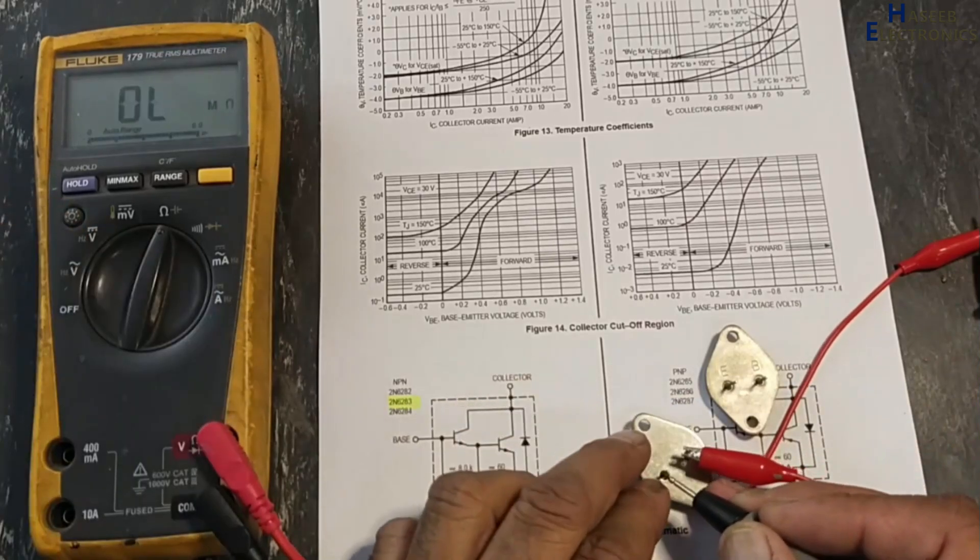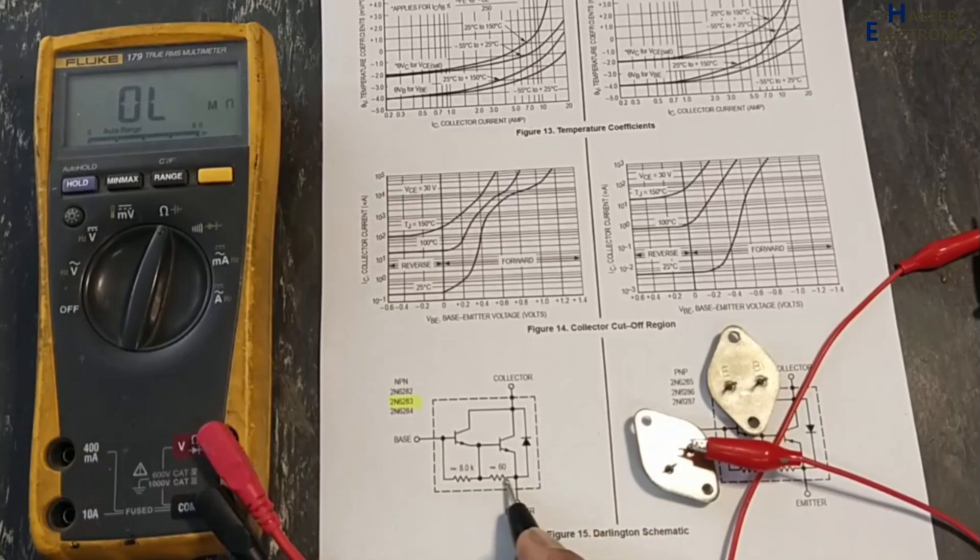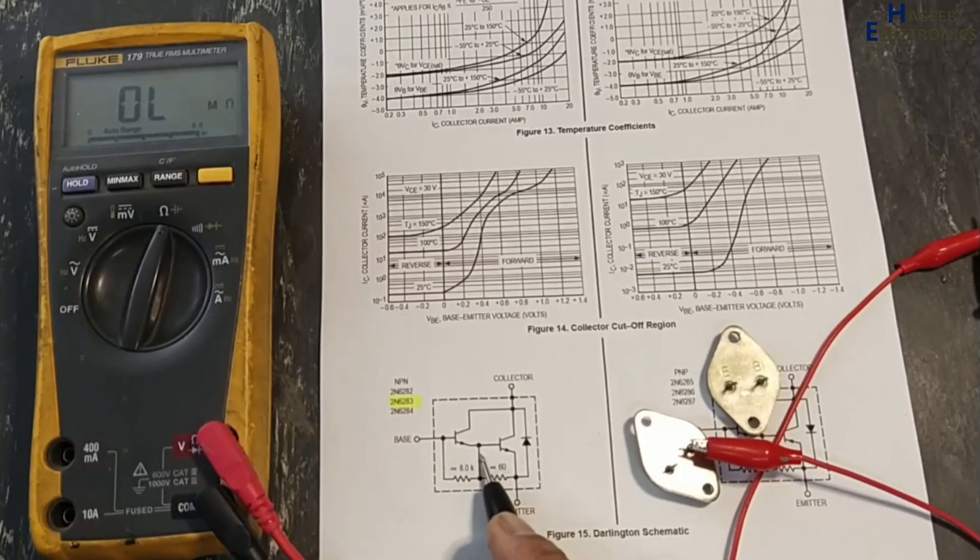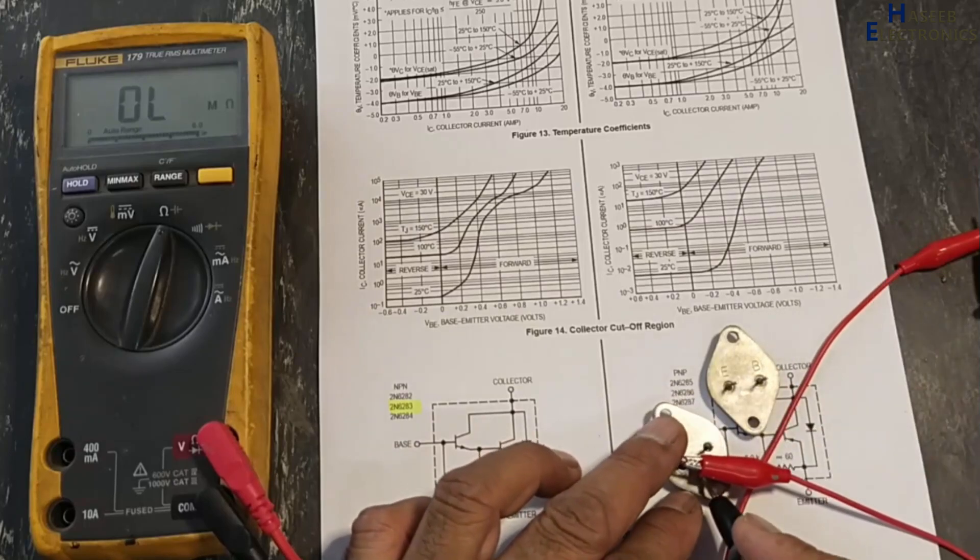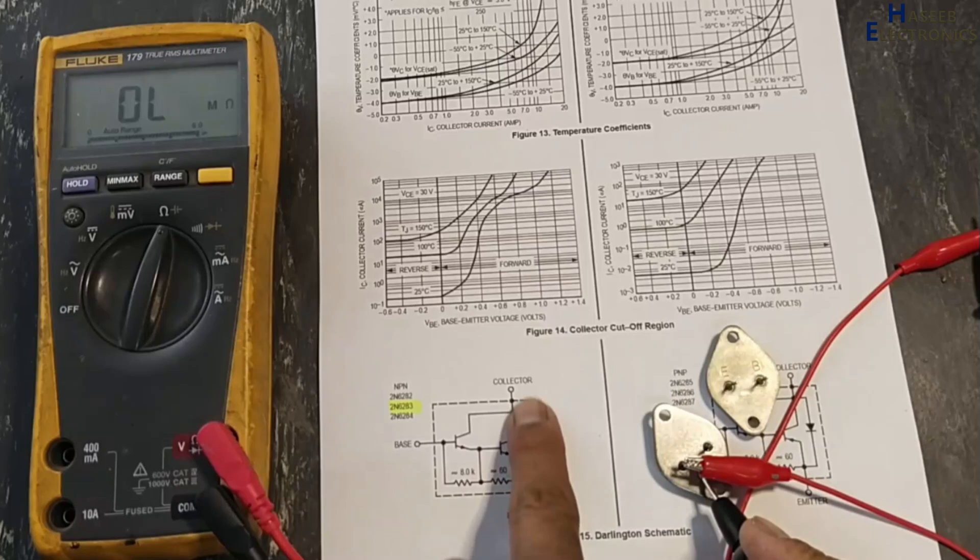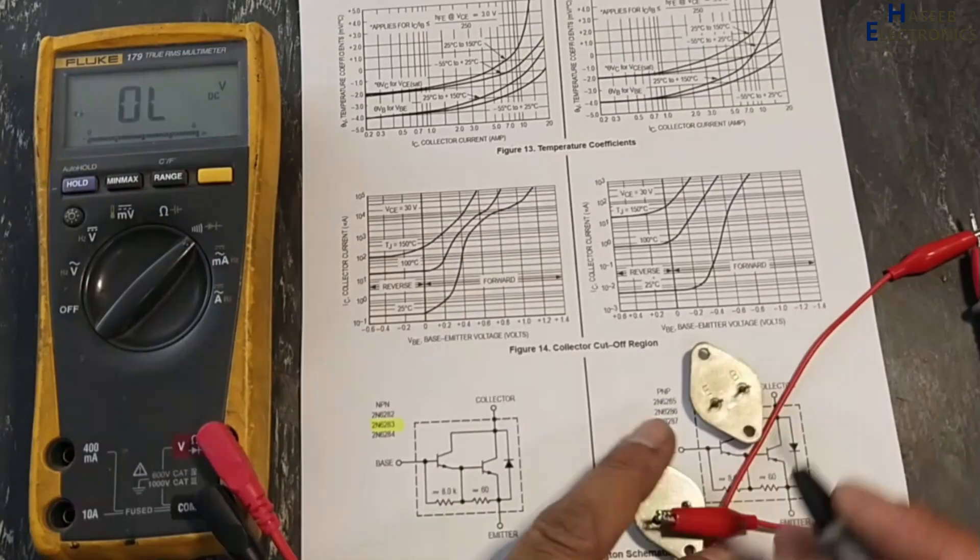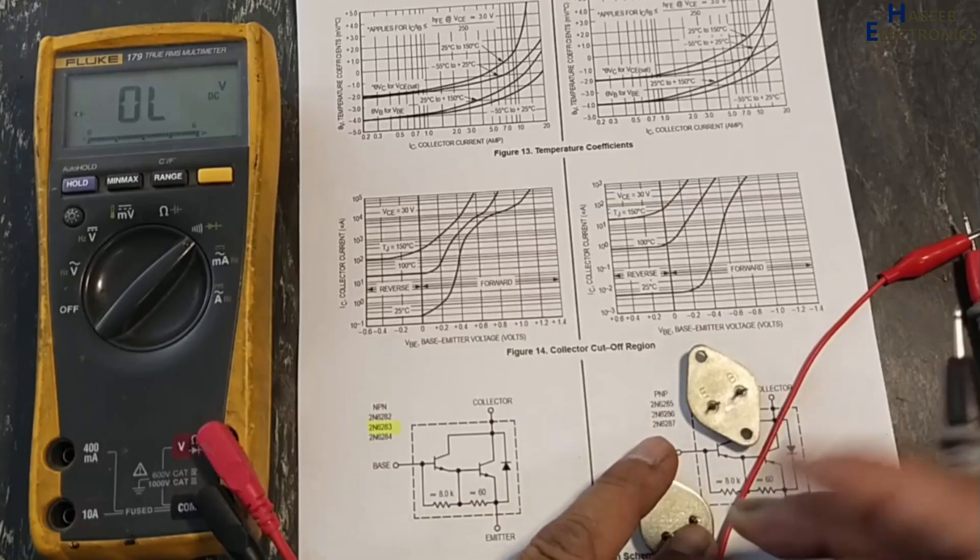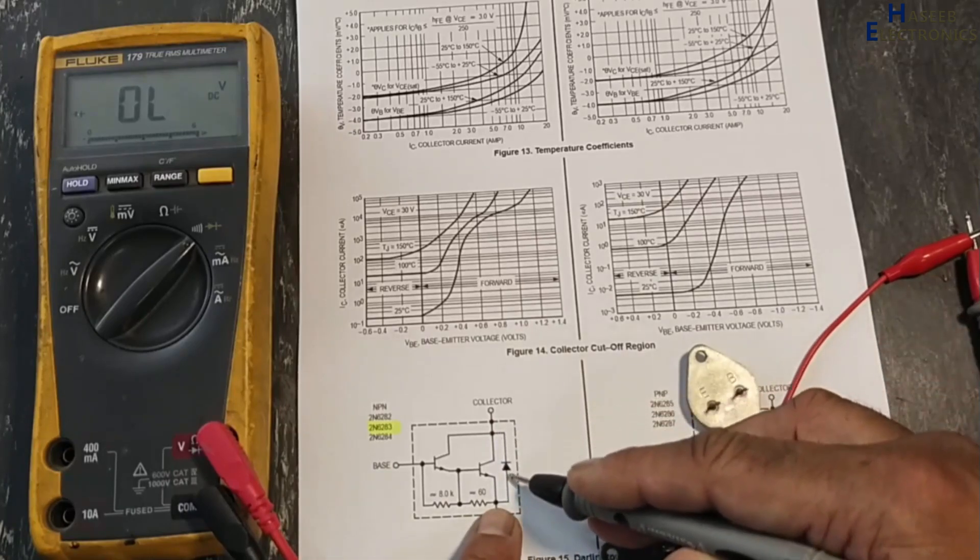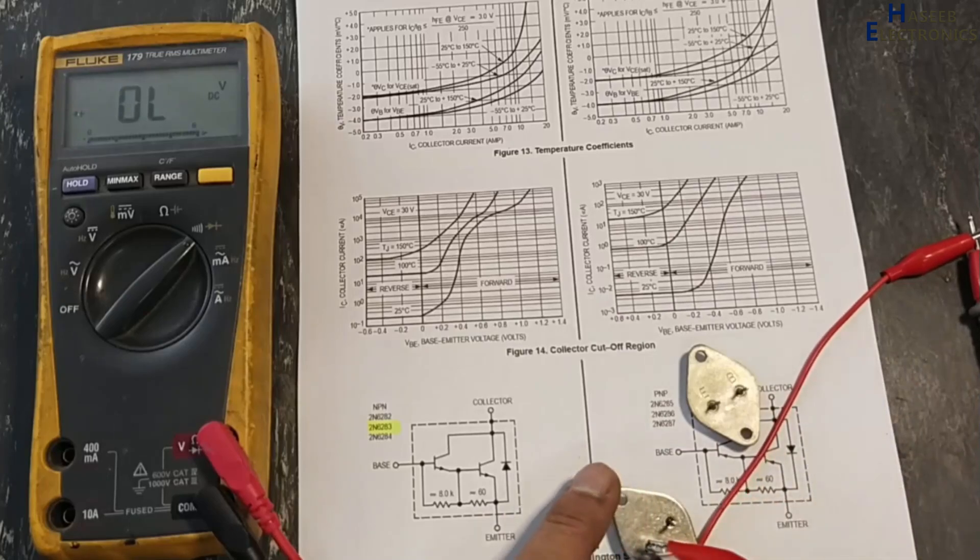If we check resistors, here it is open circuit. That means this resistor network is damaged and maybe this link is damaged. Now emitter to collector, emitter to collector, this diode is also damaged. This diode is also not giving reading.